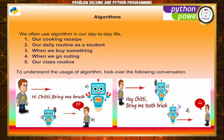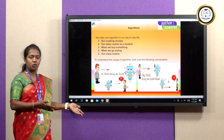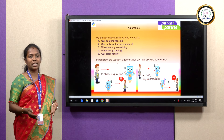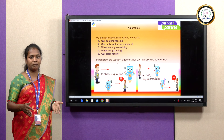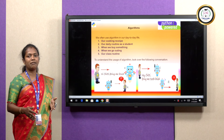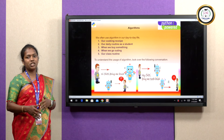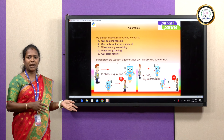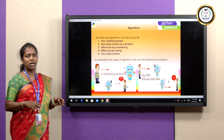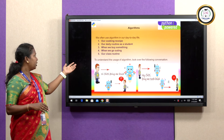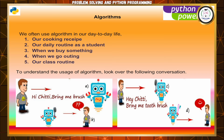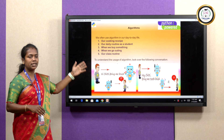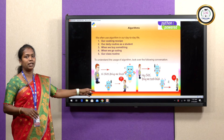Our daily routine as a student is also an algorithm. If you wake up and come to the bus, then come to class, attend five subjects with scheduled hours, lunch break, and break time — everything in student life follows day-to-day routines. When we buy something, go on outings, or follow class routines — everything satisfies the algorithm.